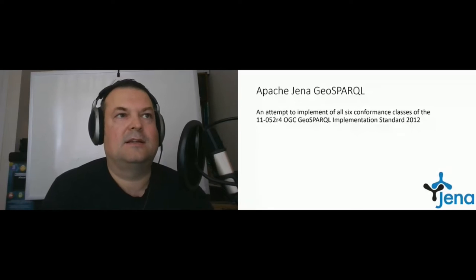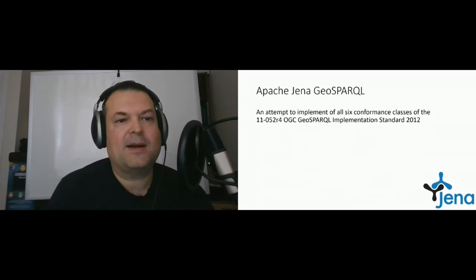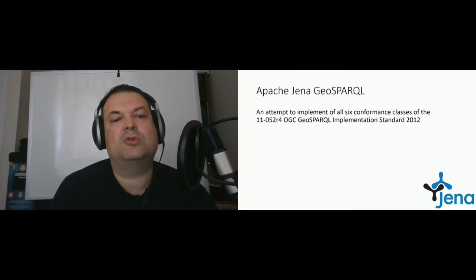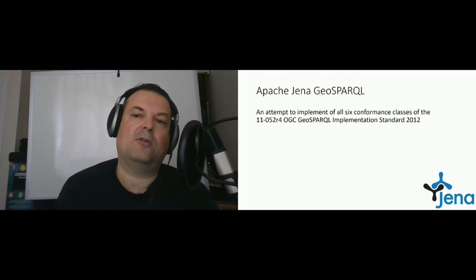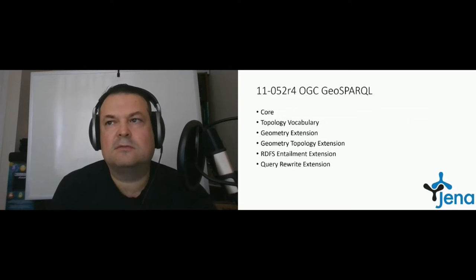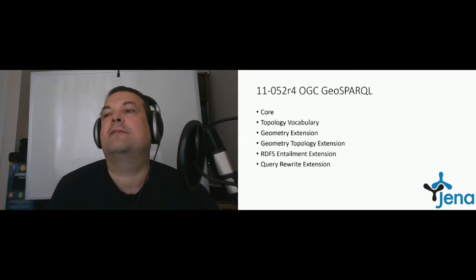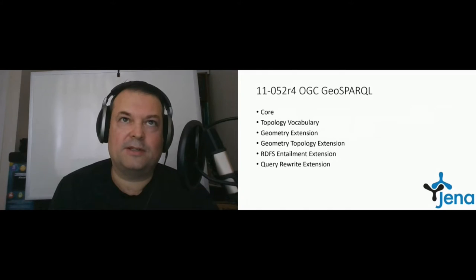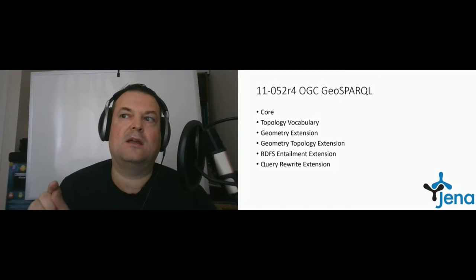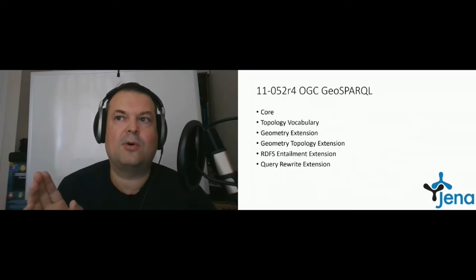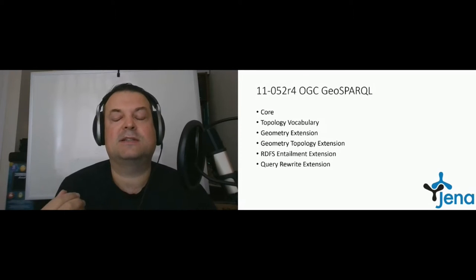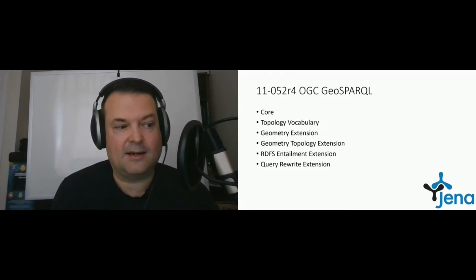The Apache Jena GeoSPARQL module is an attempt to implement all six conformance classes mentioned in the OGC GeoSPARQL implementation standard of 2012. We have six components: core, topology vocabulary, geometry extension, geometry topology extension, RDF entailment regime, and a query rewriting extension. You don't have to know about all of these to make use of GeoSPARQL in Apache Jena — this is just the full set of modules mentioned in the OGC GeoSPARQL standard.